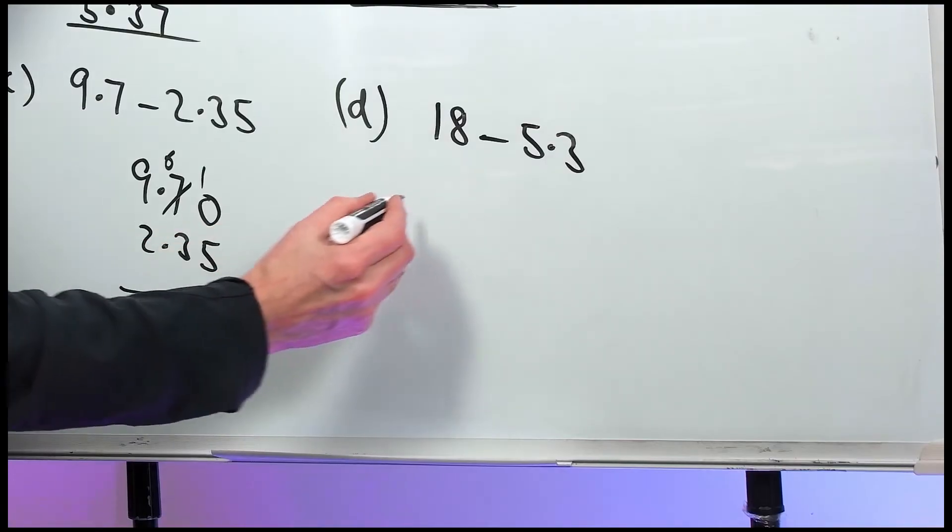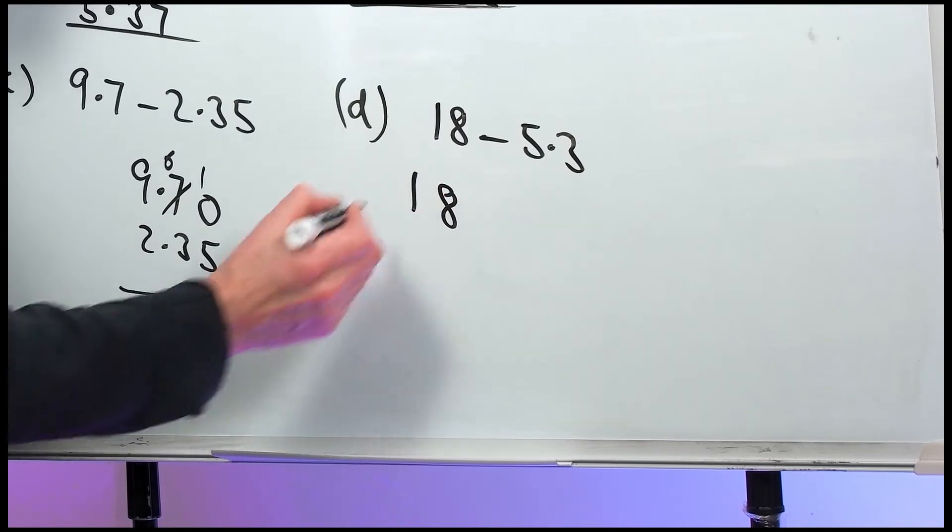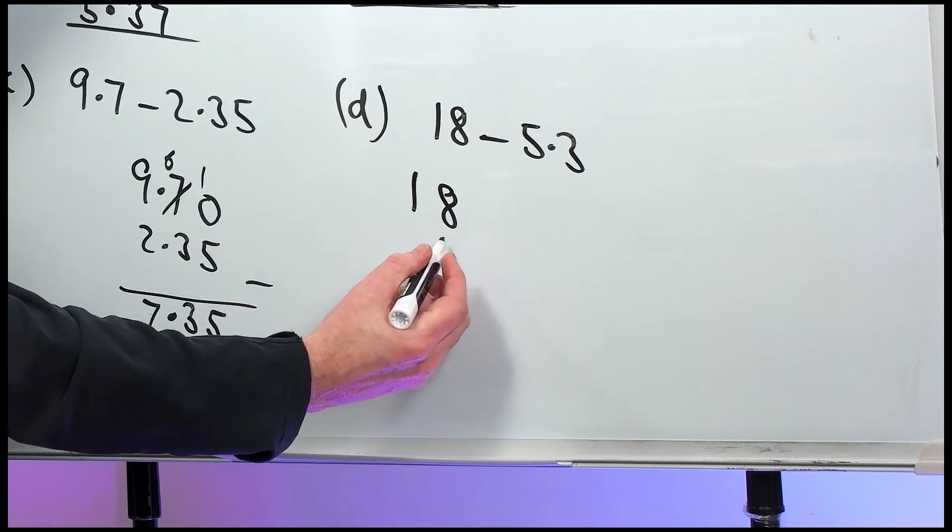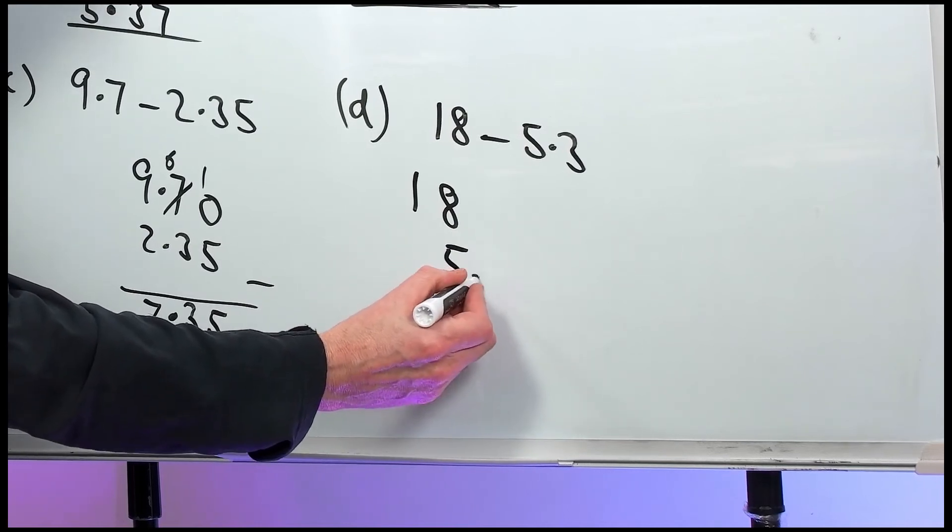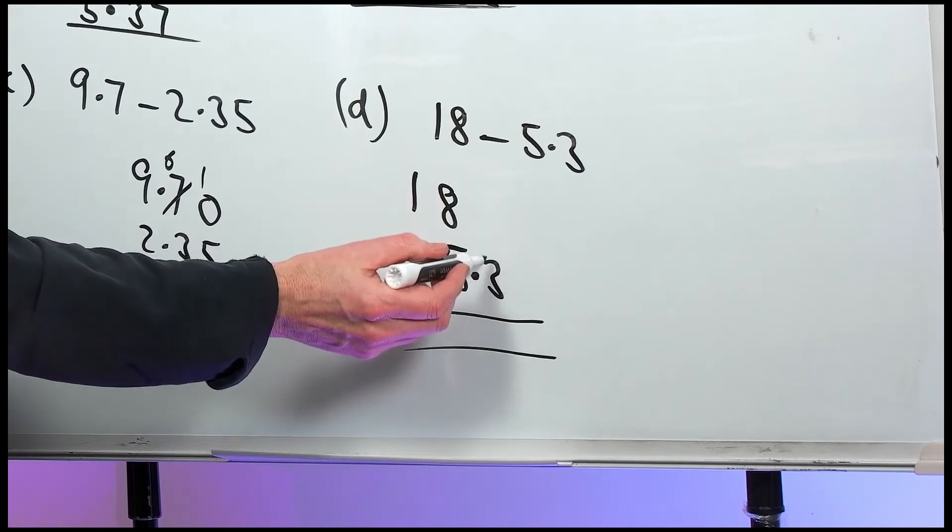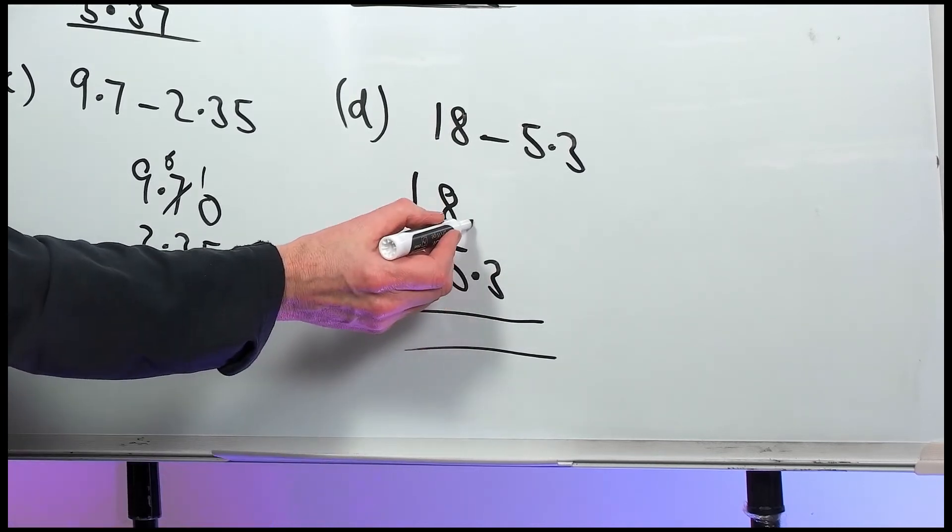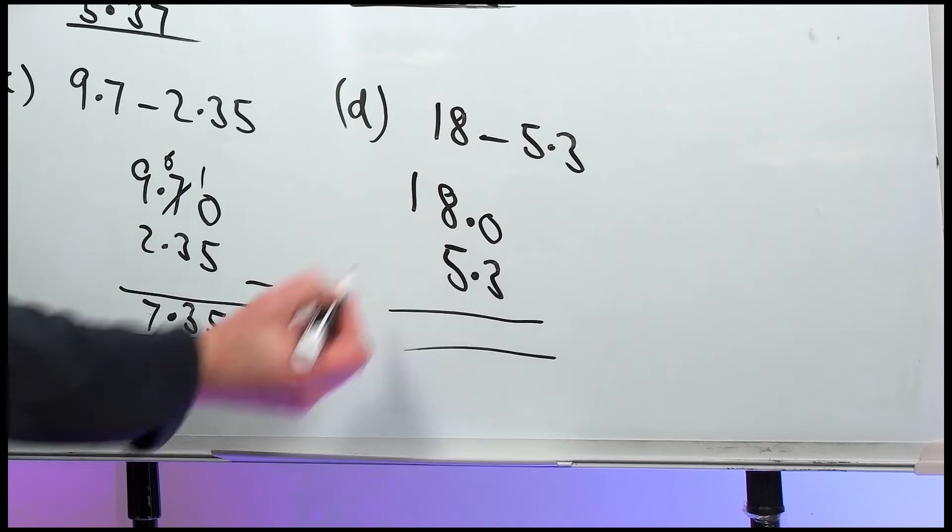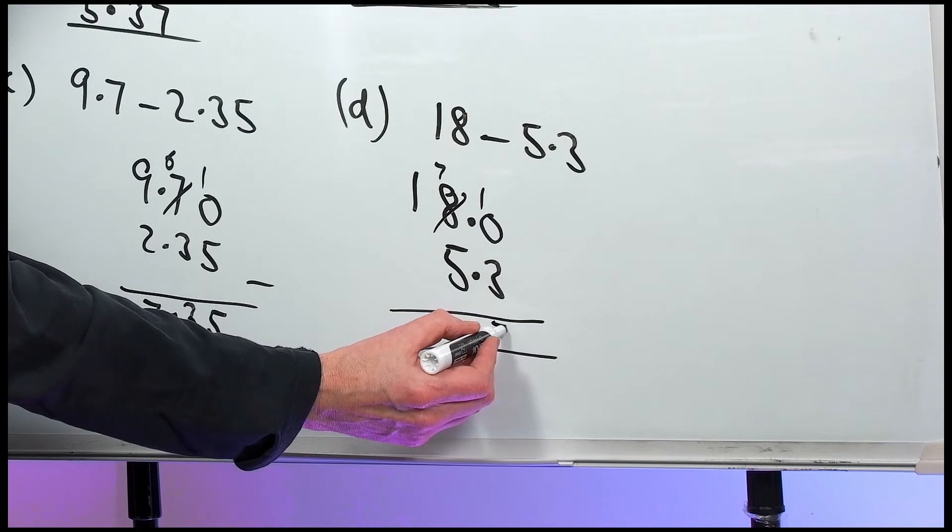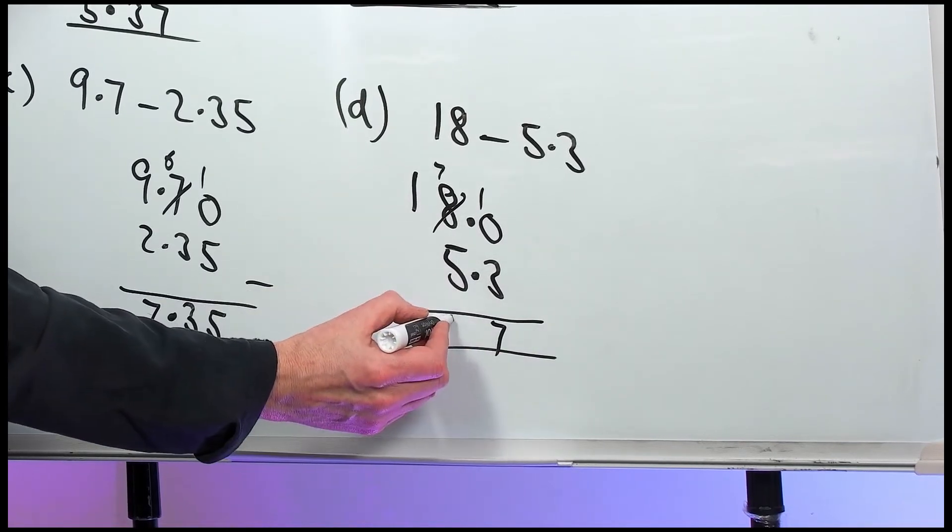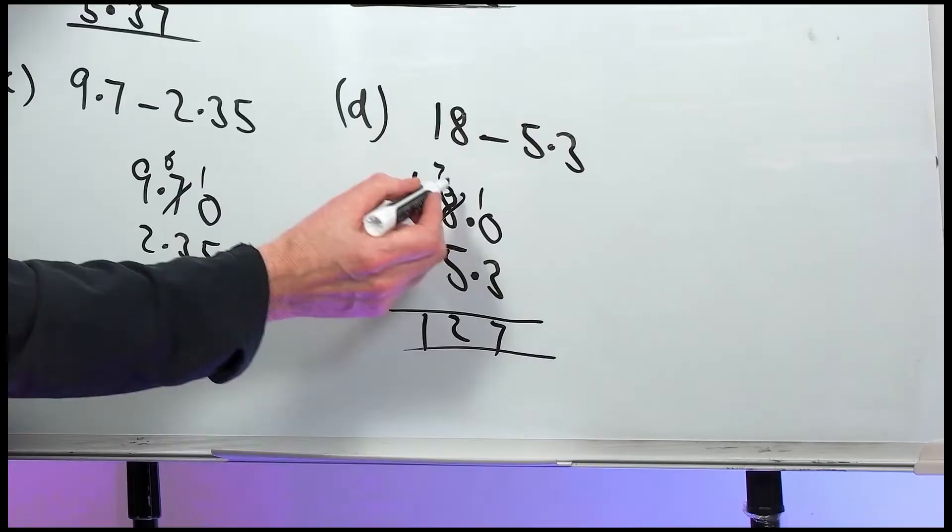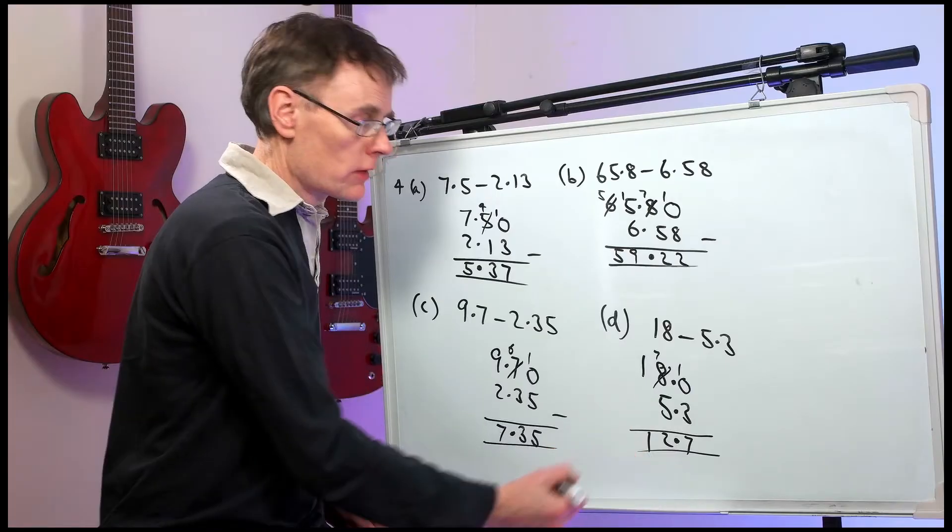Now, the last one. We must do it the right way around. 18 take away 5.3. 5 is in the units column with the 8. 5.3. Now, there's nothing here. Nothing take away 3. So, we must put in the decimal point and a 0. Steal one from the 8 to leave 7. 10 take away 3 is 7. 7 minus 5 is 2. 12.7 is wrong. The decimal point must line up. 12.7.